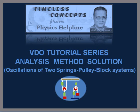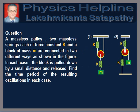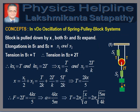In this video tutorial, we will discuss a problem on the oscillations of two-springs pulley block systems. The question is as follows. A massless pulley, two massless springs each of force constant K, and a block of mass M are connected in two different ways as shown in the figure. In each case, the block is pulled down by a small distance and released. Find the time period of the resulting oscillations in each case. The fundamental concepts of spring block systems are already discussed in a previous video on oscillations of spring pulley block systems, where it was explained why we can ignore the initial elongation and tension in the spring without any loss of accuracy. We will use those concepts to solve the problem in this question.